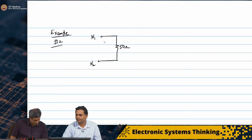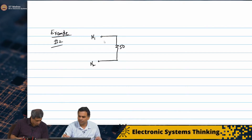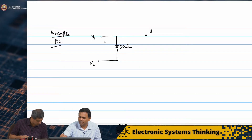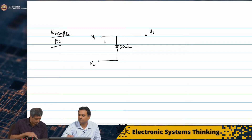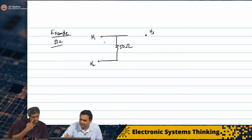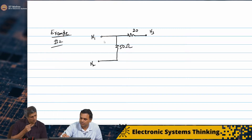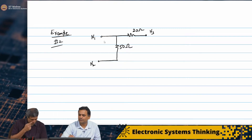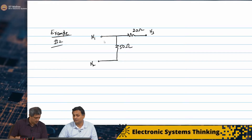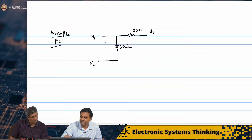You also introduce a node N3. In between, there is a 20 ohm resistor between N1 and N3, and there is also a 30 ohm between N1 and N3.